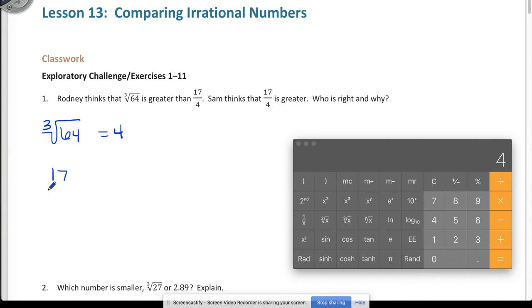Now let's see what is 17 fourths. So on our calculator, we're going to do 17 divided by 4, and I get 4.25. This equals 4.25. So which one is bigger? Who has more? Well, that would be the 17 fourths. Sam thinks the 17 fourths is greater. So we're going to say Sam is correct. There we go. Let's go to the next one.